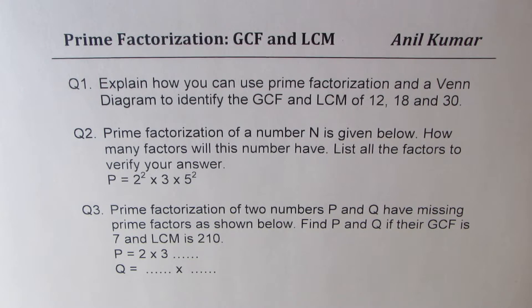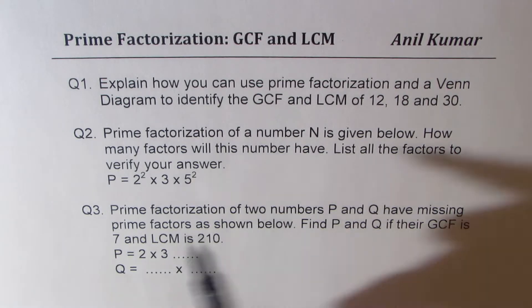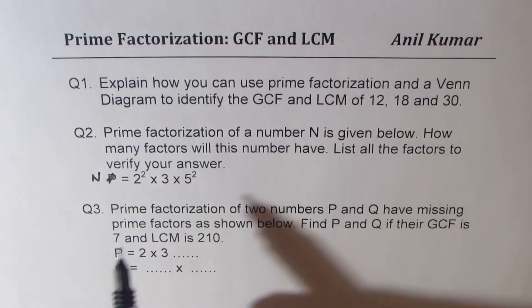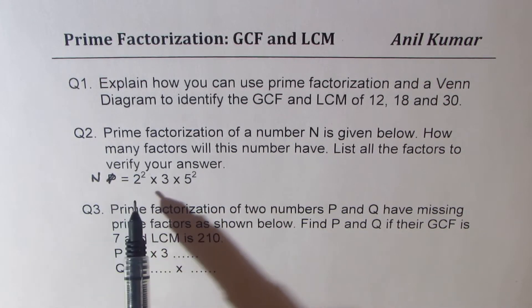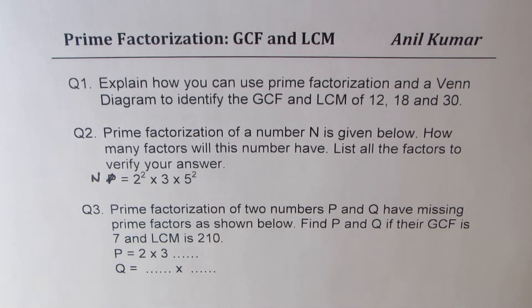Question number two: the prime factorization of a number N is given. How many factors will this number have? List all the factors to verify your answer. The prime factorization of number N is 2 squared times 3 times 5 squared — that means two twos and two fives.